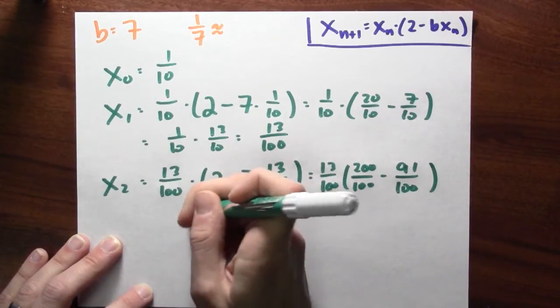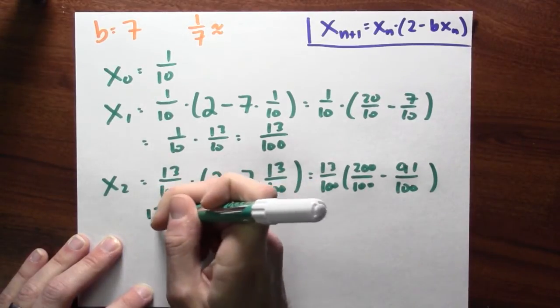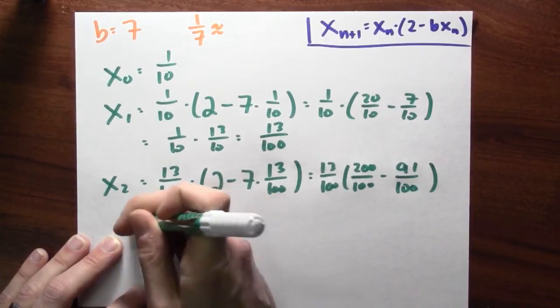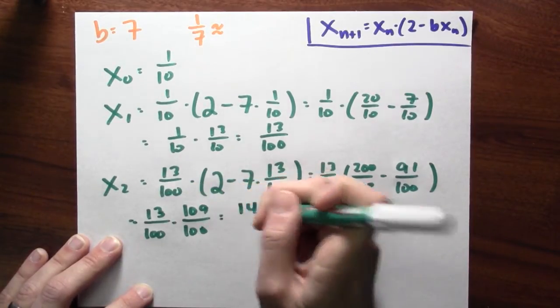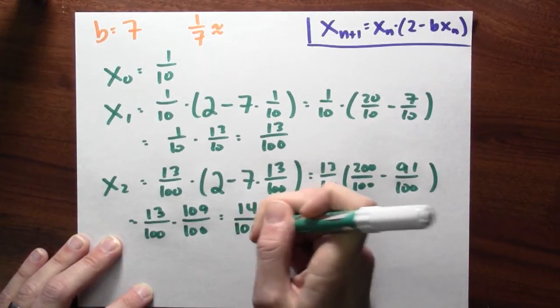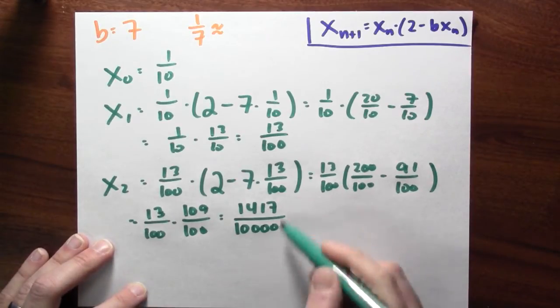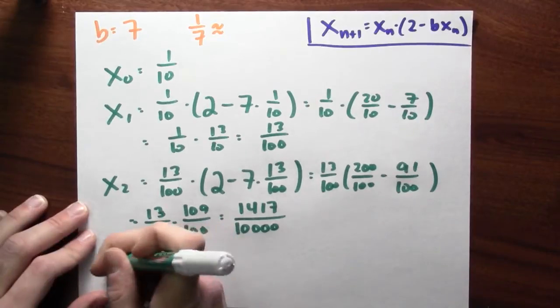Now, 200 minus 91, that's 109 hundredths times 13 hundredths. And 13 times 109 is 1,417. And 100 times 100 is 10,000. So that's an even better approximation to the actual value of 1/7. And I could repeat the process again.